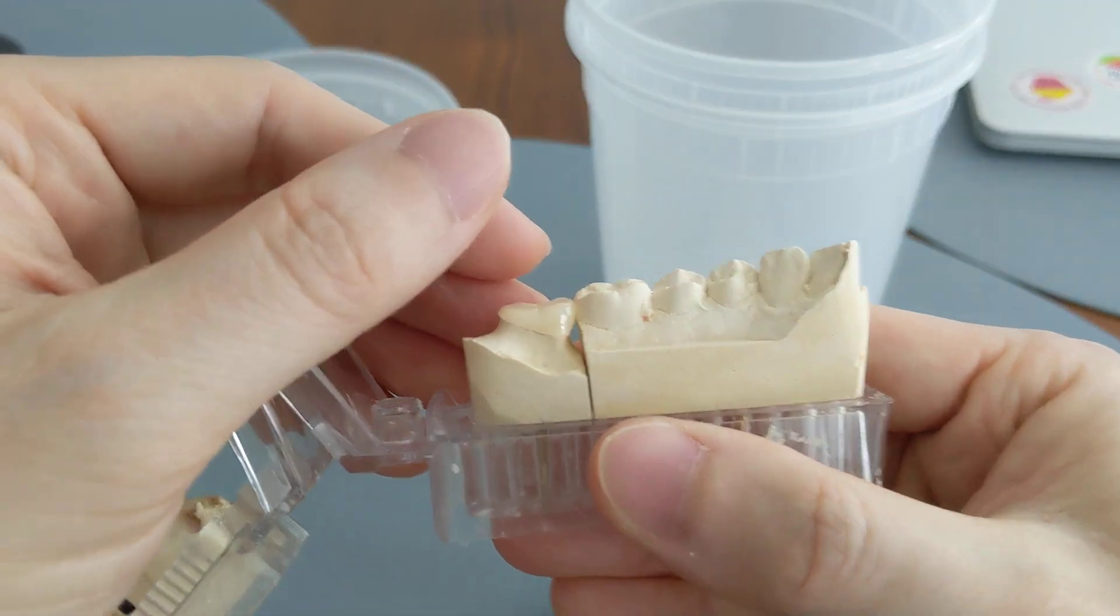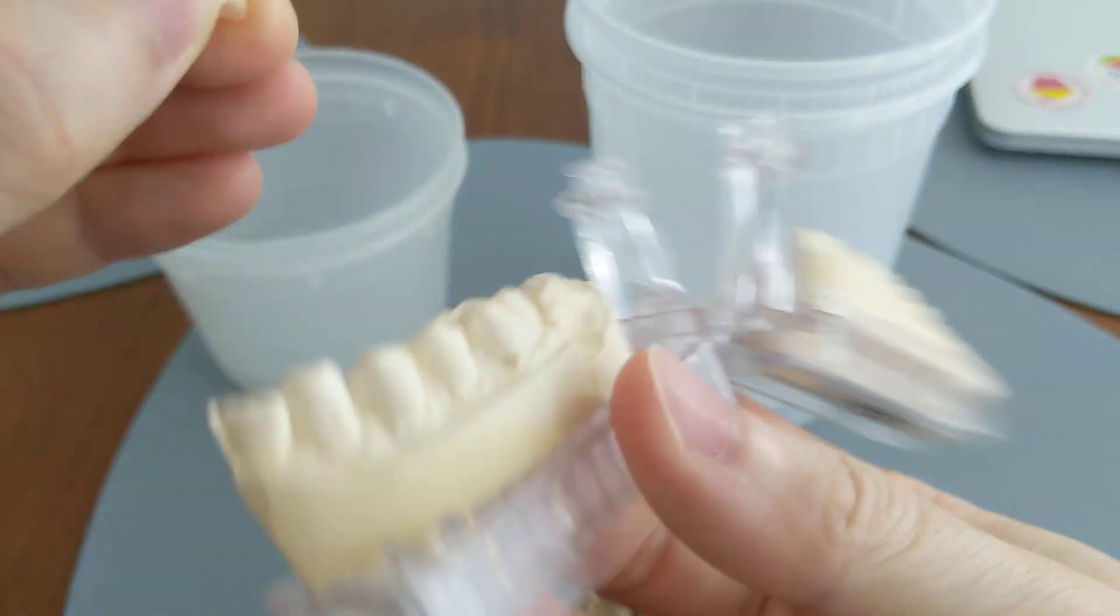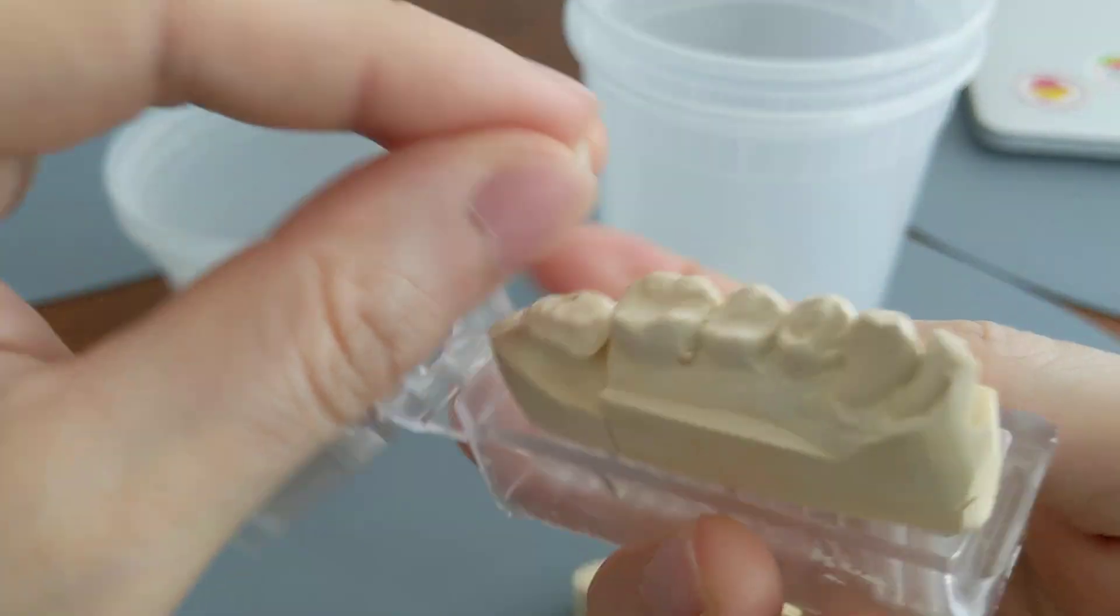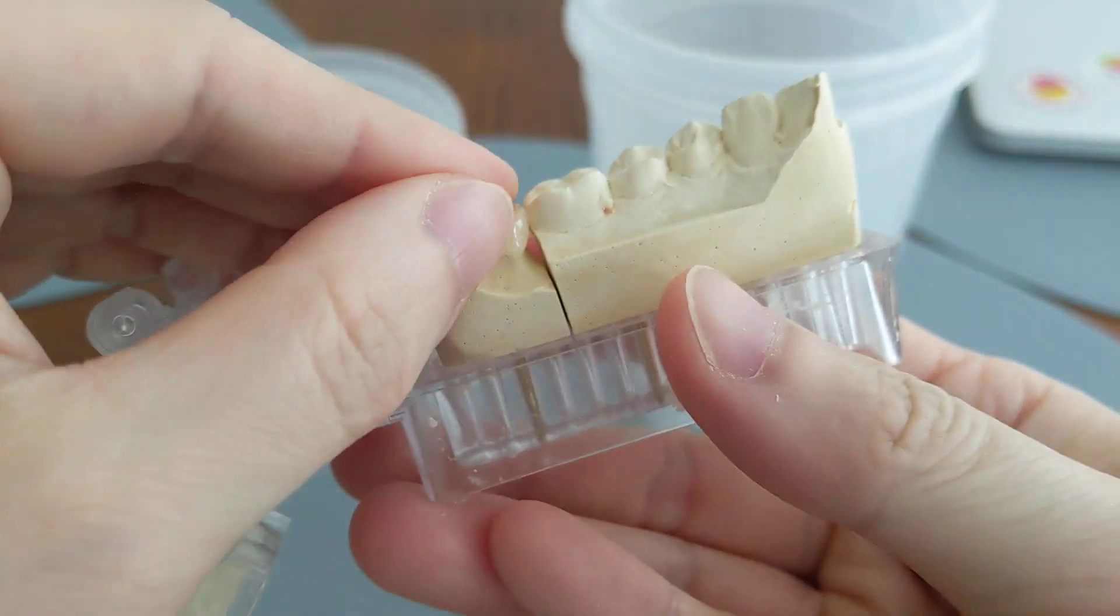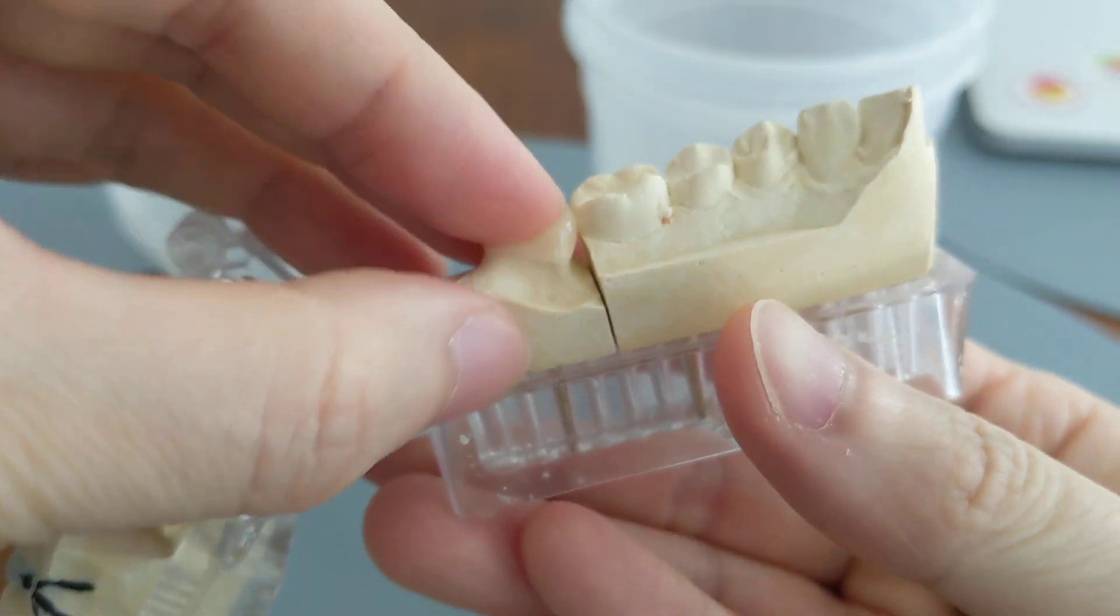So to show you, here we have a crown. You can see it's very short. And because it's very short, it's easy for it to slide off to one side and just pop off.